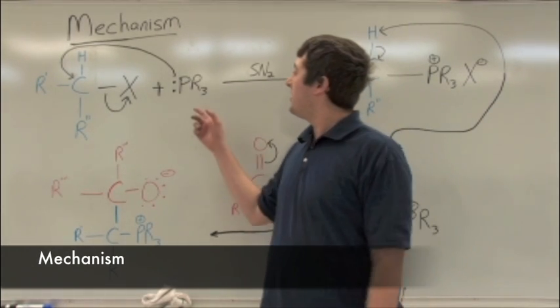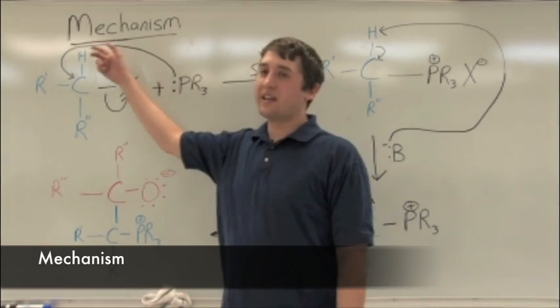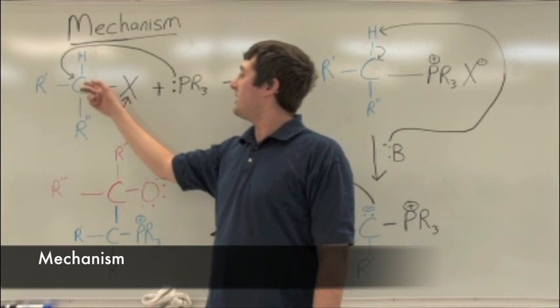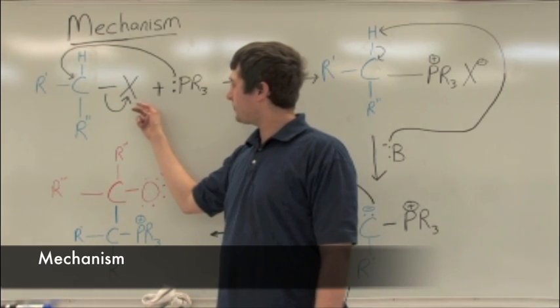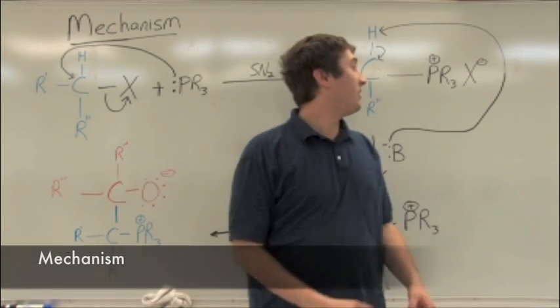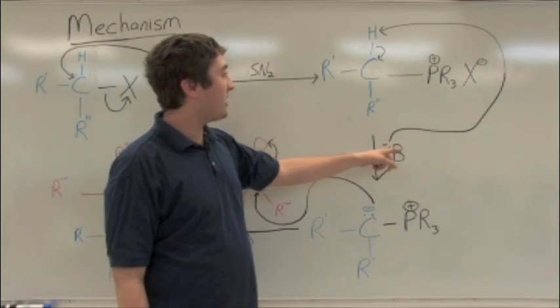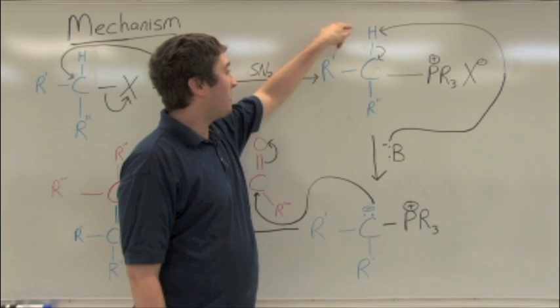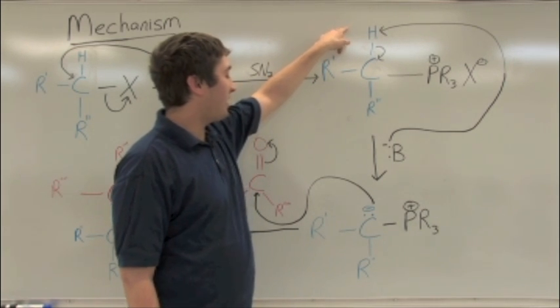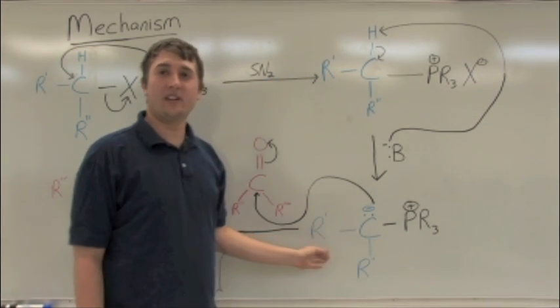Now I'm going to discuss the mechanism. The electrons from your phosphine are going to attack the backside of the carbon via an SN2 reaction and your leaving group is going to leave. This will form the phosphonium halide intermediate. From here, your strong base is going to deprotonate the hydrogen from the phosphonium halide and this will give your ylide intermediate.